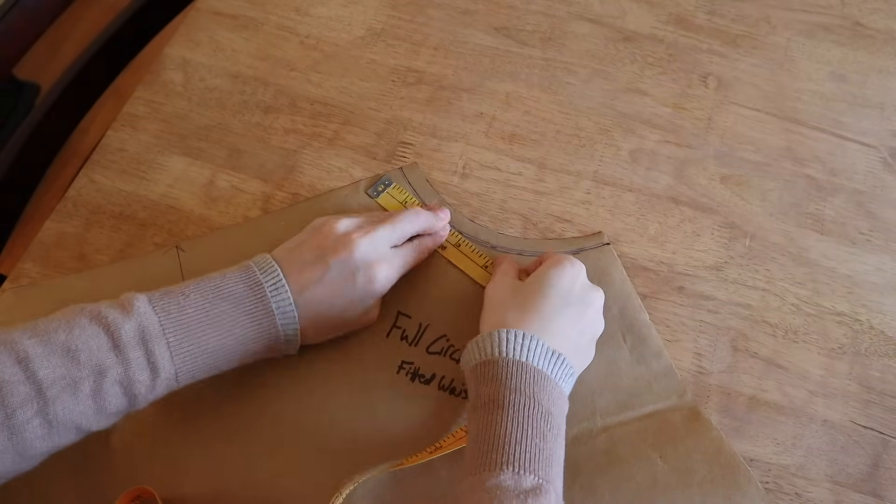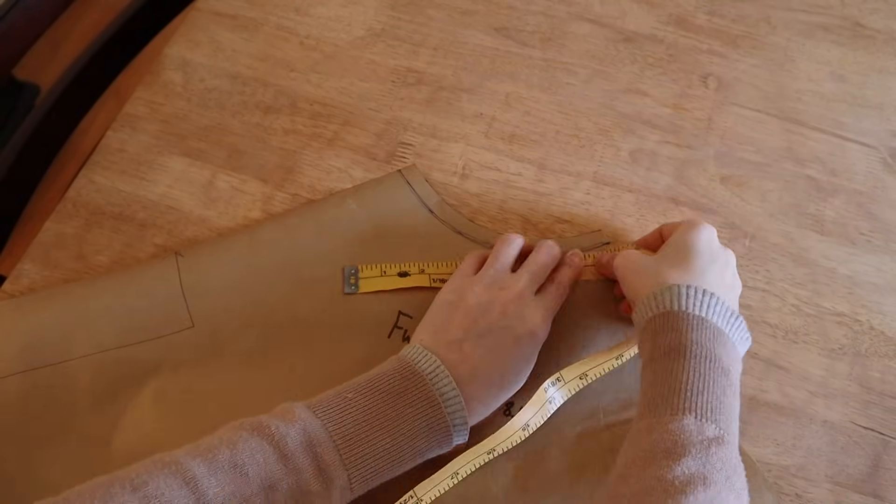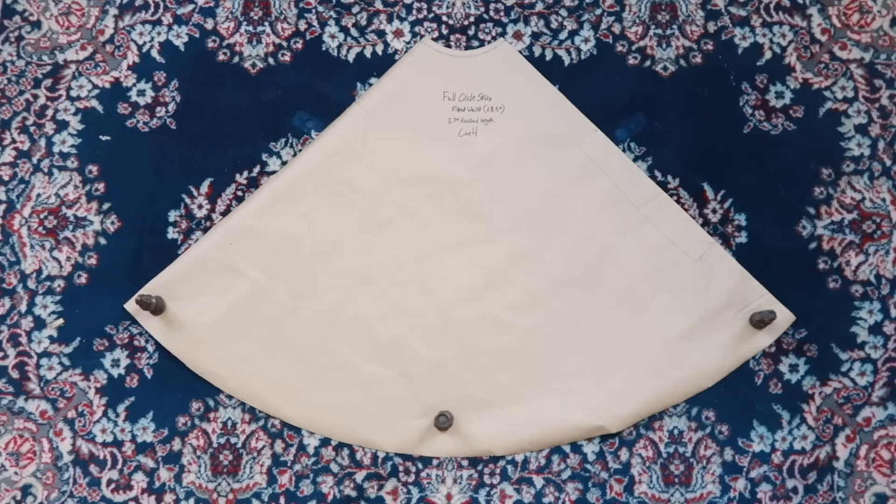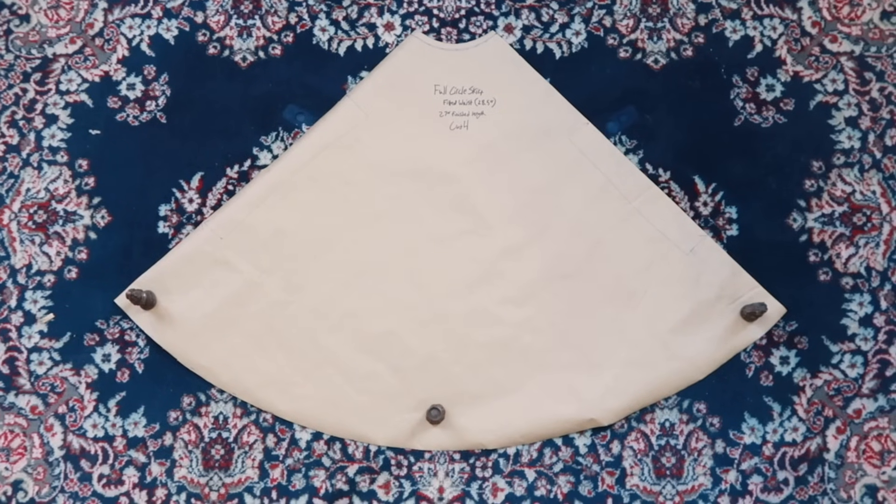Now check that by measuring it, and you should come very close to 7 and an eighth of an inch, or whatever your quarter waist measurement was. And congratulations! Pattern number one is done.